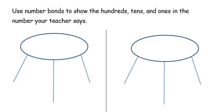For example, if the teacher says the number 243, the students would write that number in the middle of the number bond.